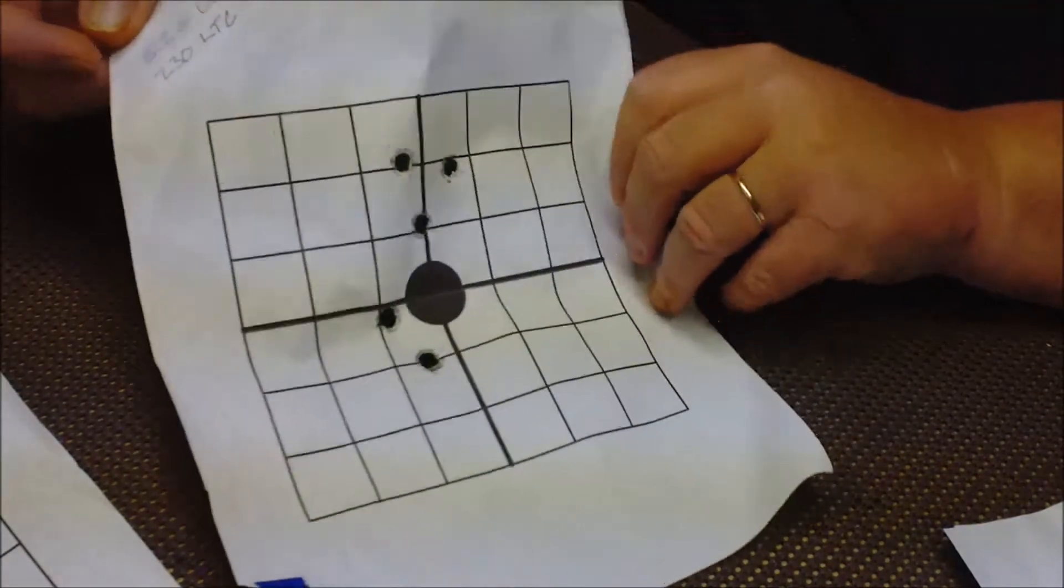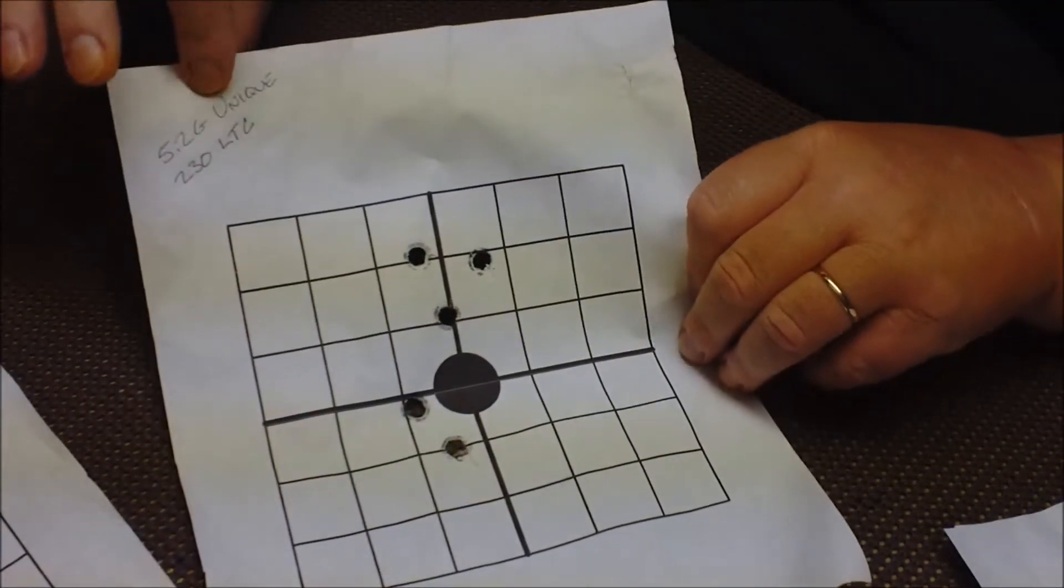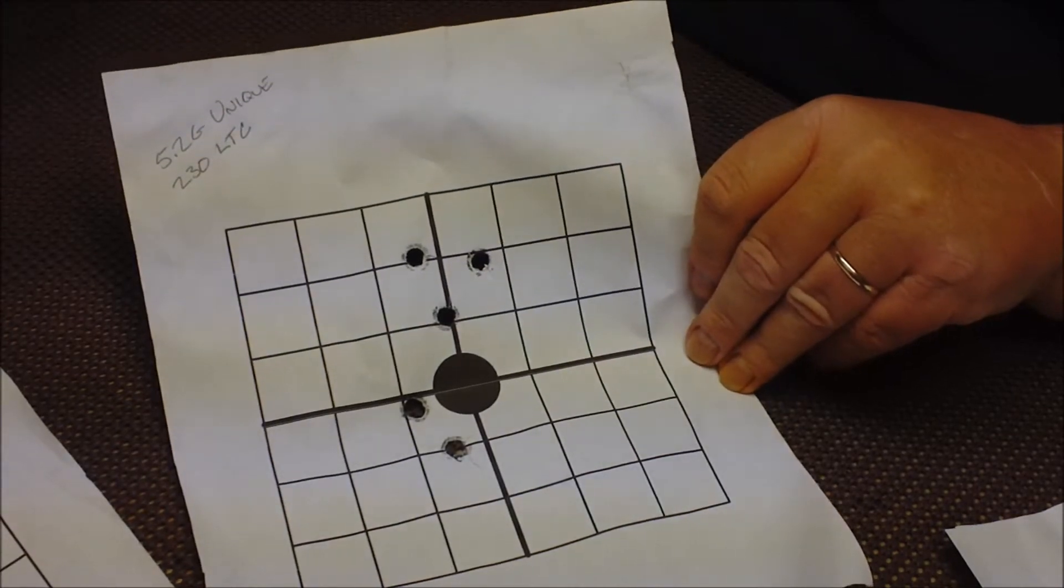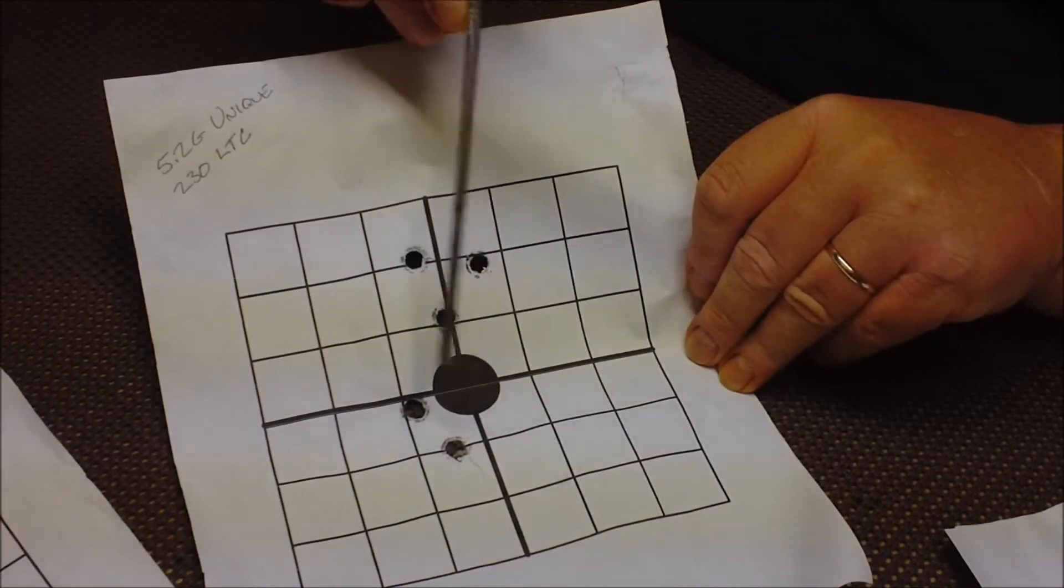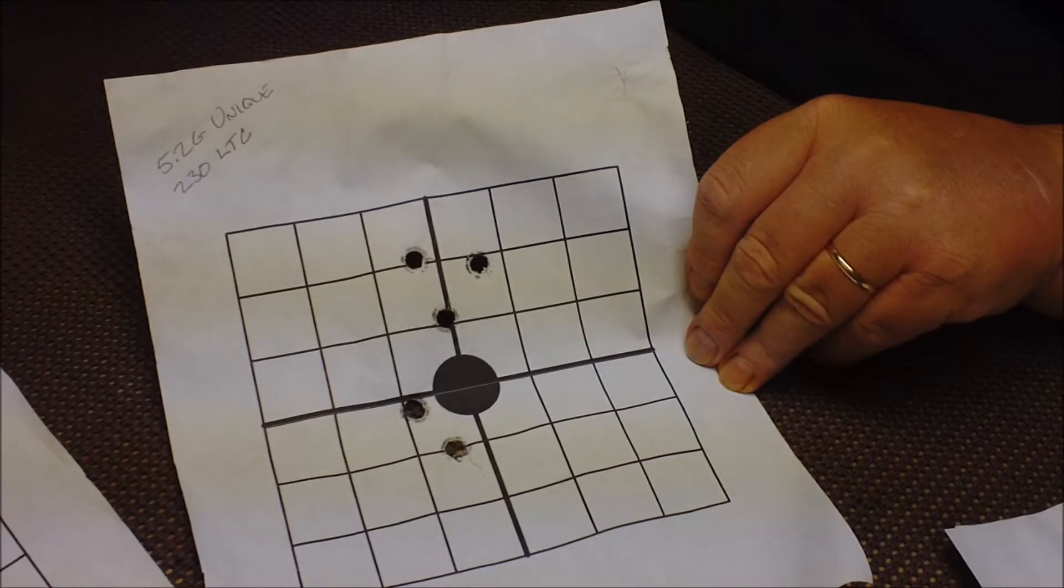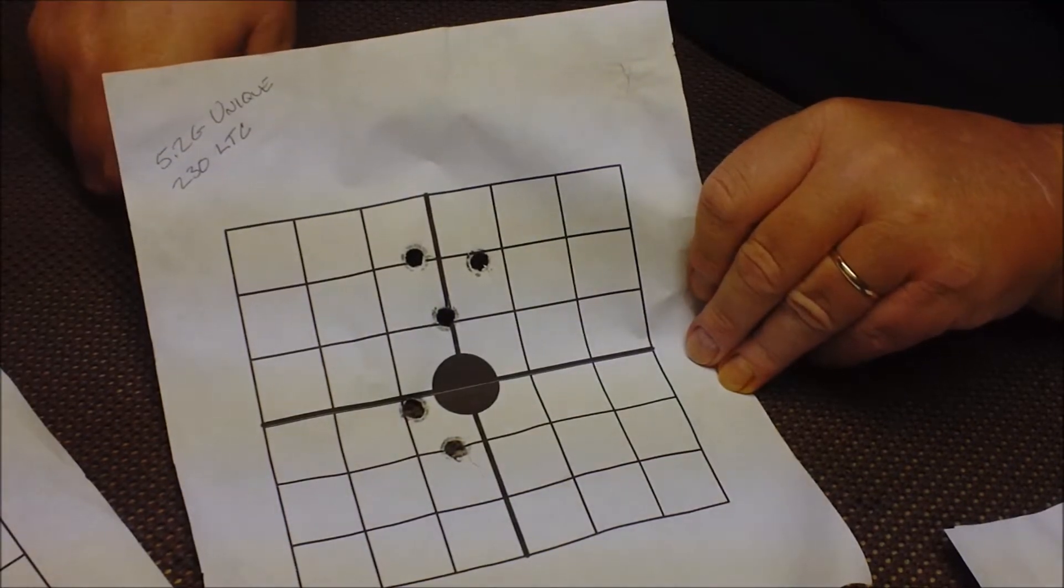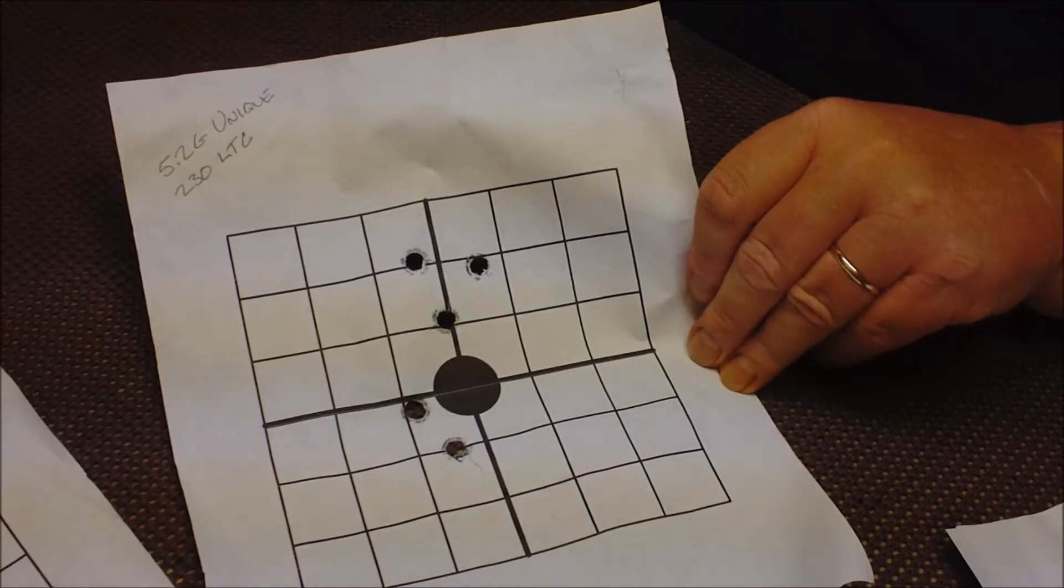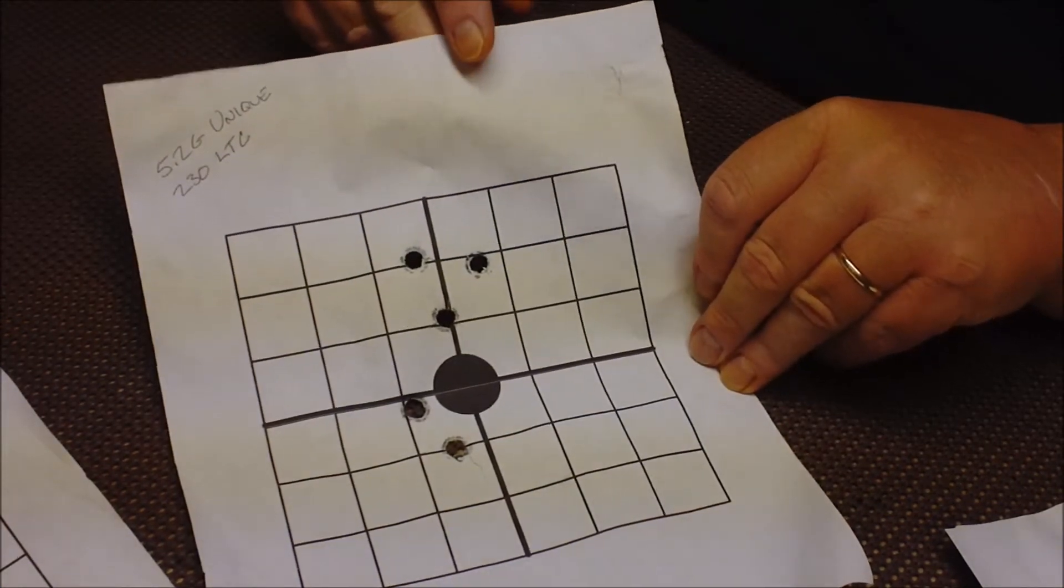Our first load was 5.2 grains of Unique. I always mark my targets right up here in the corner so I know what they are. You can see they're all over, and we don't want that. Obviously we need a little bit more horsepower to push it out the end of that muzzle a little faster.